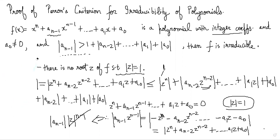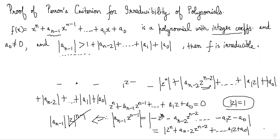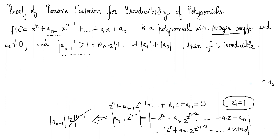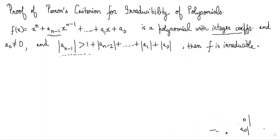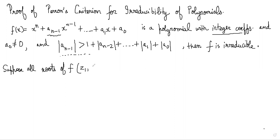Now we must prove that f has exactly one root with modulus greater than 1 and n−1 roots with modulus less than 1. We proceed by supposing all roots z_1, z_2, …, z_n of f have magnitude less than 1, and show this is impossible.